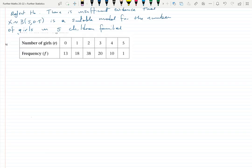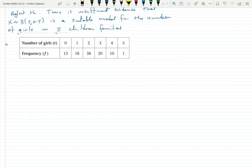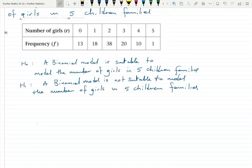Now for the second part: a hypothesis test on a binomial where there is no fixed parameter. We use the data itself to estimate p, and that will cost one degree of freedom. The hypothesis is set up slightly differently — we don't specify the value of p, we just state that a binomial model is suitable for the number of girls in five-children families.